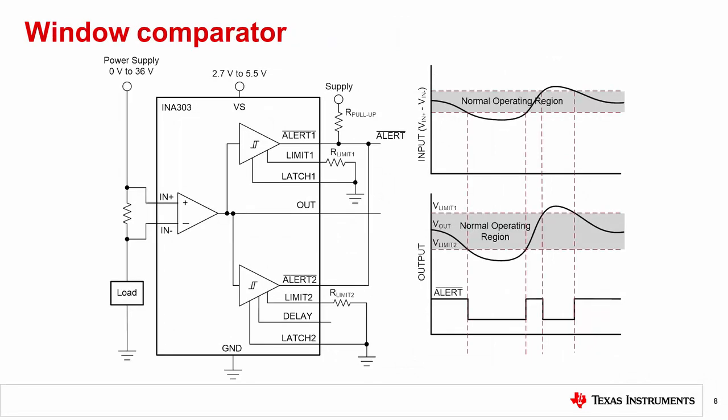Finally, here is a window comparator circuit, which alerts whenever the load current is outside of a set window. The device shown here is the INA303, another current sense amplifier with dual comparators. The output of the internal amplifier is passed to each comparator and checked against limits set by external resistors. These two limits create the window of normal operation.